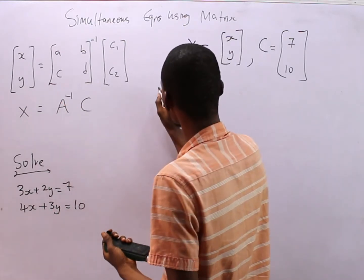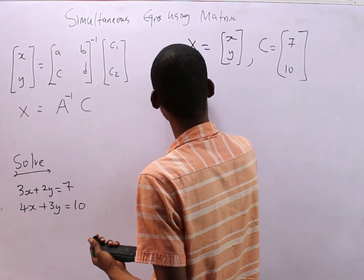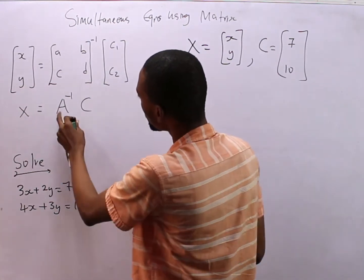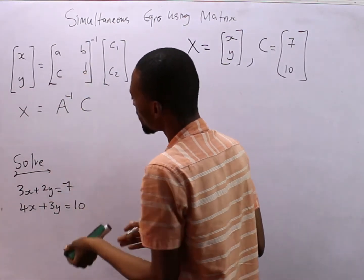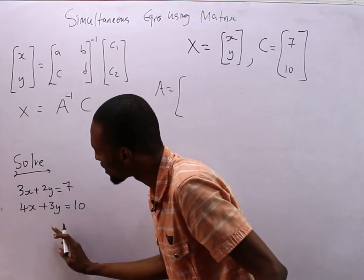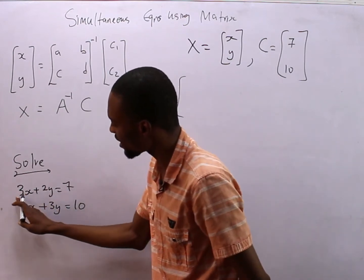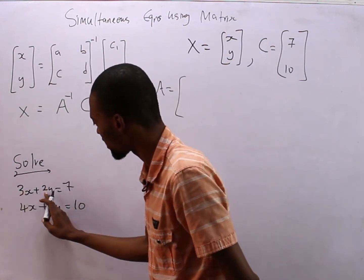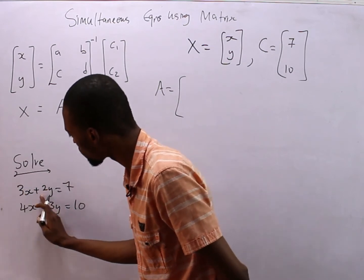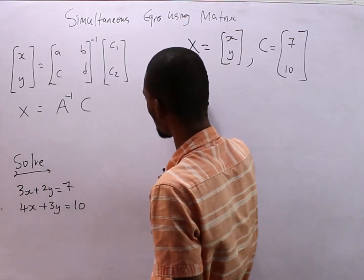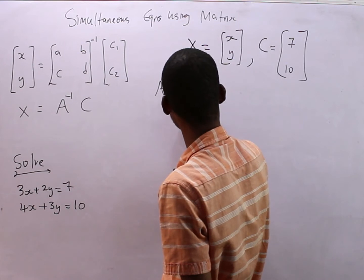Let's look at A before A inverse. A is simply, you see A is the same thing as a, b, c, d. What do they represent? The coefficient of these guys. Look at this, this x is carrying 3, that's the coefficient, this one is carrying 2.